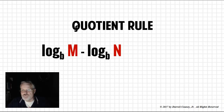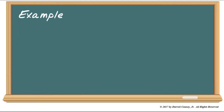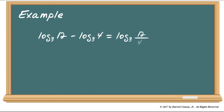Now let's look at the quotient rule. Log b(m) minus log b(n) — again, the bases have to be the same — will equal log b(m over n). It's pretty simple, really. Here's an example: log base 3 of 12 minus log base 3 of 4 is going to be log base 3 of 12 divided by 4, which will be log base 3 of 3. Notice that is 3 to what power equals 3? Well, of course, that would be 1.